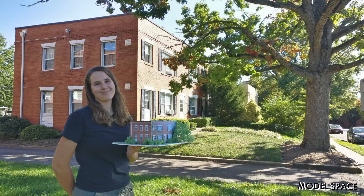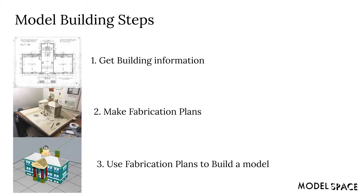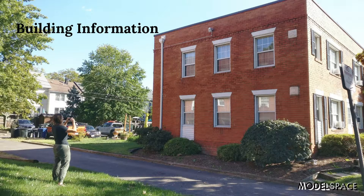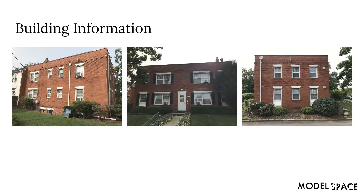Before we get started with the building, let's talk about what we learned in last week's lesson. Last week we covered the big model building steps: getting your building information, making fabrication plans from that building information, and then using those fabrication plans to build your model. For this course I took photos of an apartment I wanted to build as part of my building information, so I got a few images of the building faces. An architect would call these facades or elevations, so you might hear me refer to these images as facades or elevations throughout this lesson.